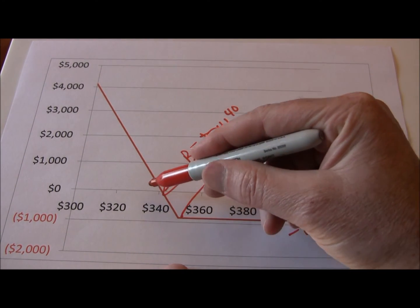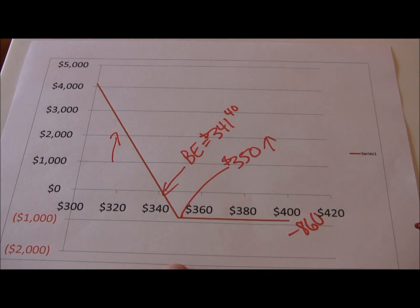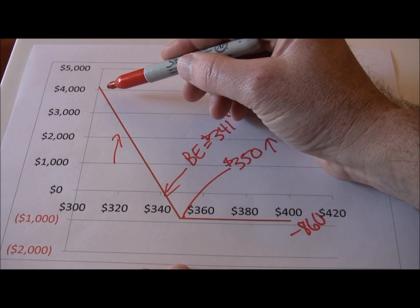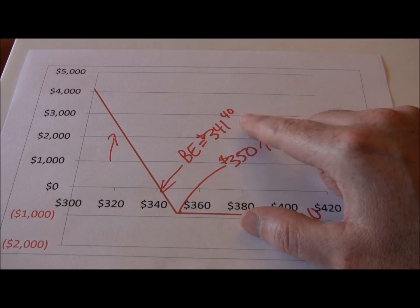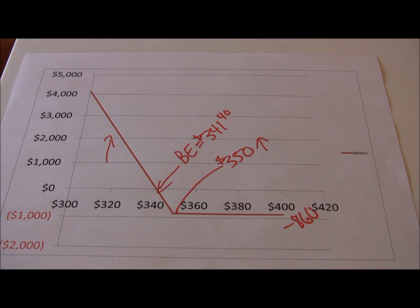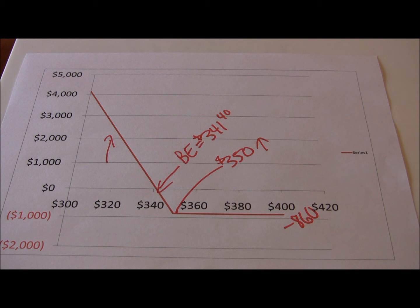As the stock price falls further, we make more and more money — you can see that as the stock price goes down, our profit goes up. The best case scenario for the person owning the put contract would be Apple declares bankruptcy by the third Friday in June, generating a profit of $341.40 per share. That's a theoretical best case scenario and not likely to happen. But in reality, a drop of 10 to 15% in the Apple stock price could generate very large returns for the person holding that put option.